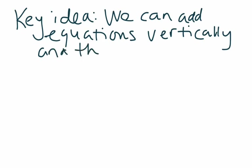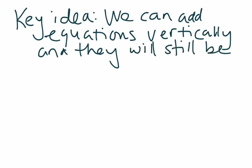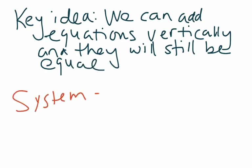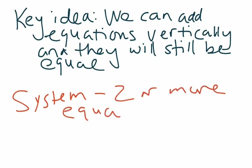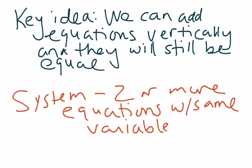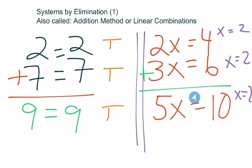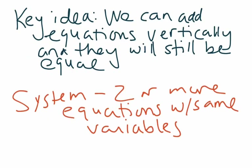They will still be equal provided that we are working within a system. Remember that a system is two or more equations with the same variables. And so as long as you're dealing with the same variables — where X is the same for both equations — then you are allowed to do this.